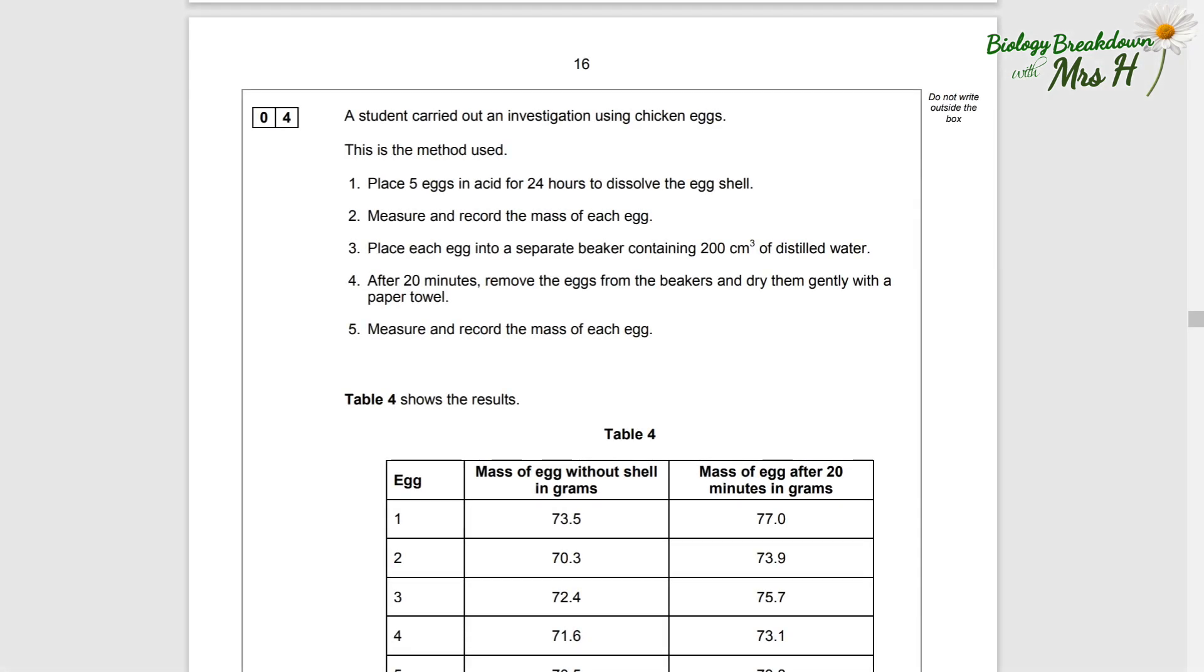Question four: A student carried out an investigation using chicken eggs. This is the method used. Number one: place five eggs in acid for 24 hours to dissolve the eggshell. Two: measure and record the mass of each egg. Three: place each egg into a separate beaker containing 200 centimeters cubed of distilled water. Four: after 20 minutes remove the eggs from the beakers and dry them gently with a paper towel.